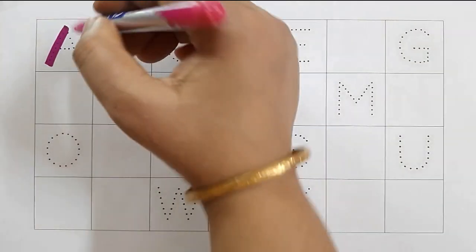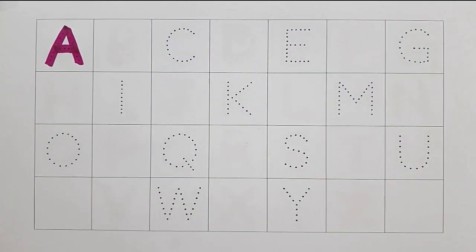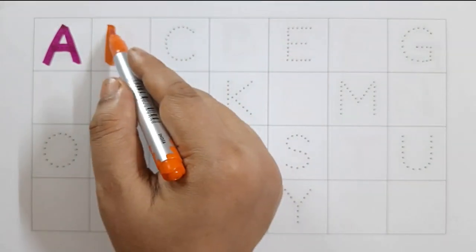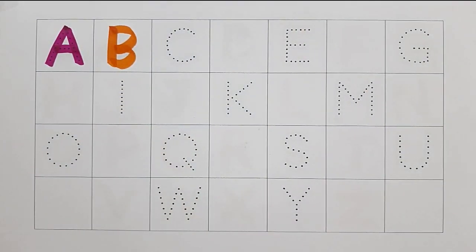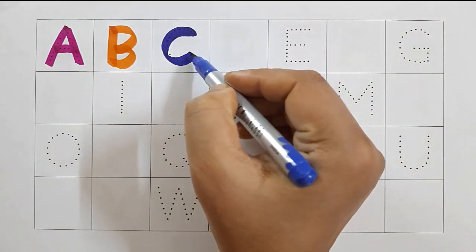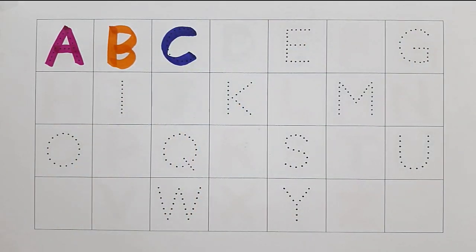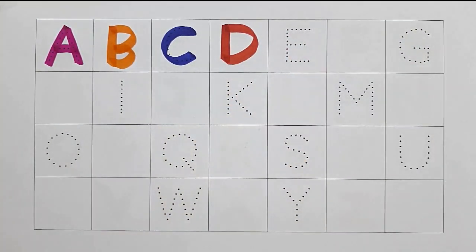A. A for apple. B, B for ball. C, C, C for cat. D. D for dog.